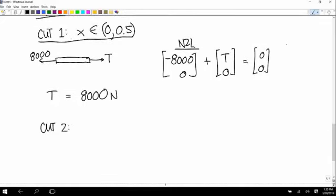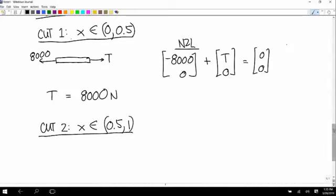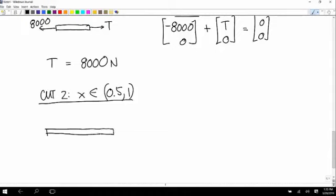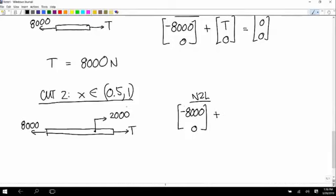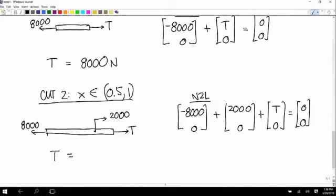And now cut 2 is between 0.5 and 1. So now we have the 8,000 here. And now somewhere else we have the 2,000 going the other way. And the tension. And so Newton's second law says negative 8,000 plus positive 2,000 plus T equals 0. And so T is equal to 6,000.